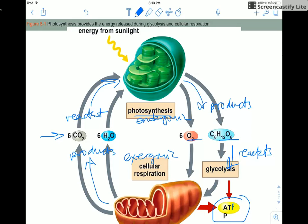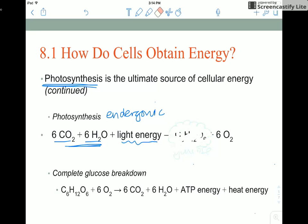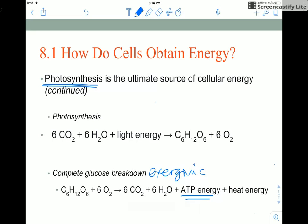These exergonic and endergonic processes are linked via ATP — that kind of middleman, the intermediary between endergonic and exergonic processes. The exergonic process of cellular respiration releases energy in the form of ATP, and that energy can be coupled to other endergonic reactions in the cell, such as protein synthesis and DNA synthesis.